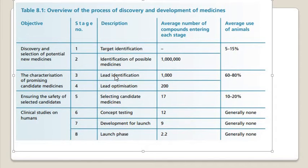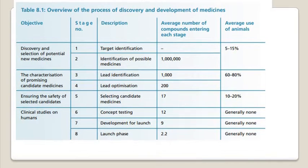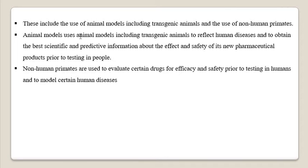This drug testing process includes the use of animal models, including transgenic animals — genetically modified organisms (GMOs) — which can be used for drug testing. Non-human primates are also used as model organisms. Non-human primates are animals closely related to humans — gorillas, chimpanzees, lorises, monkeys — and because of this close relation, they can be used as testing organisms for particular drugs.